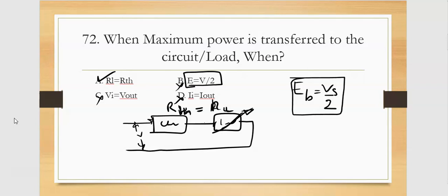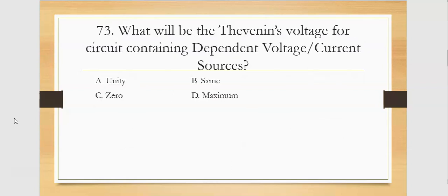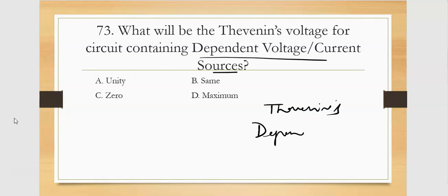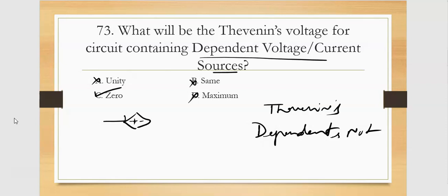Next question: What will be the Thevenin voltage for a circuit containing dependent voltage and current sources? In Thevenin's theorem, dependent voltage sources are not applicable — hence the value will be zero. So the Thevenin voltage for a circuit with dependent voltage sources will be zero.